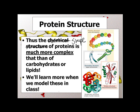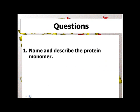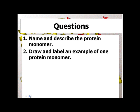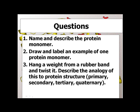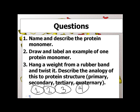We're going to build some molecular models in class and practice looking at these different types of shapes. For now you should be able to answer: name and describe the protein monomer; draw and label an example of one protein monomer; go do the rubber band thing — hang it, twist it, relate it to primary which means one, secondary which means two, tertiary which means three, quaternary which means four. It has these four levels of complexity. See you in class. Bye-bye.